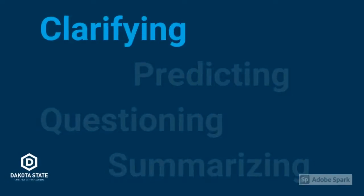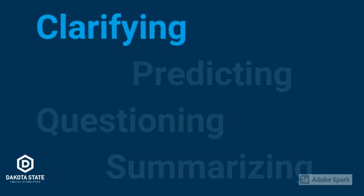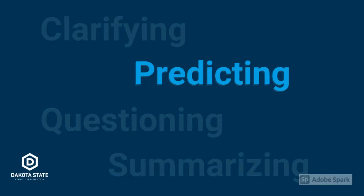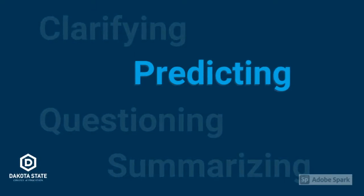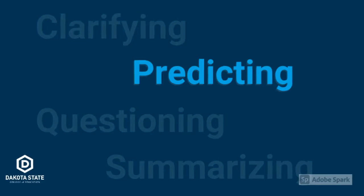To clarify, students gain a deeper knowledge of things from the passage that they don't understand or know. To predict, students indicate what they think will happen in the passage. They may draw from prior knowledge or context clues.